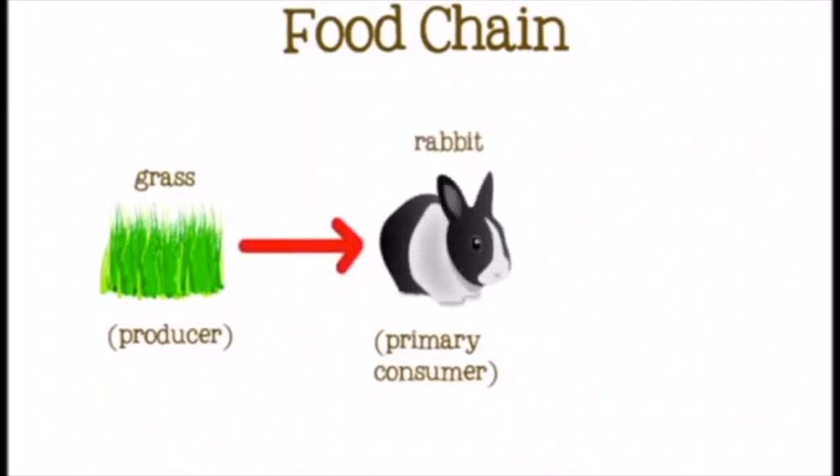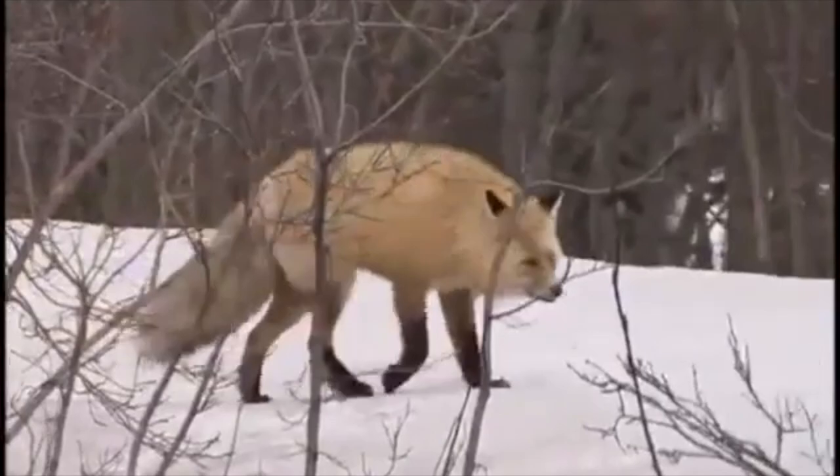But do you know why almost all food chains begin with plants? Because plants can make their own food during photosynthesis, while animals cannot make their own food because they don't have chlorophyll inside their cells.